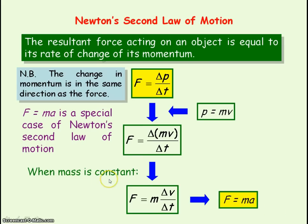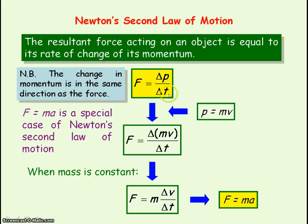When objects have velocities that approach the speed of light, mass is not constant, and so F equals MA is not valid. But the equation — resultant force equals the rate of change of momentum — will always be valid.